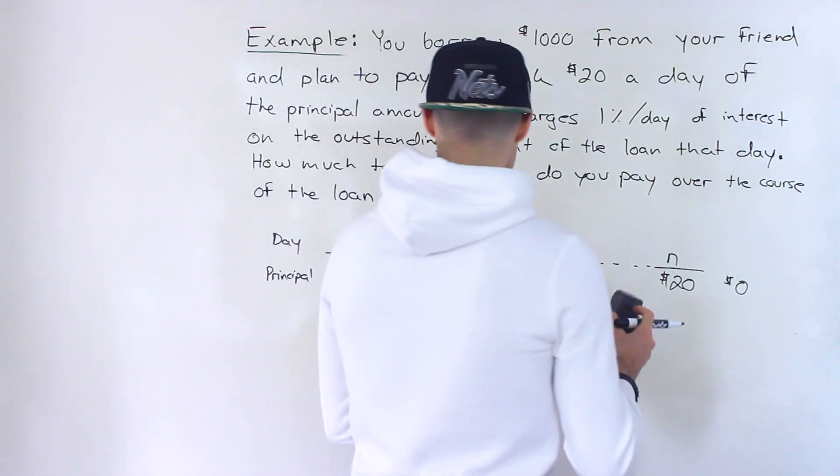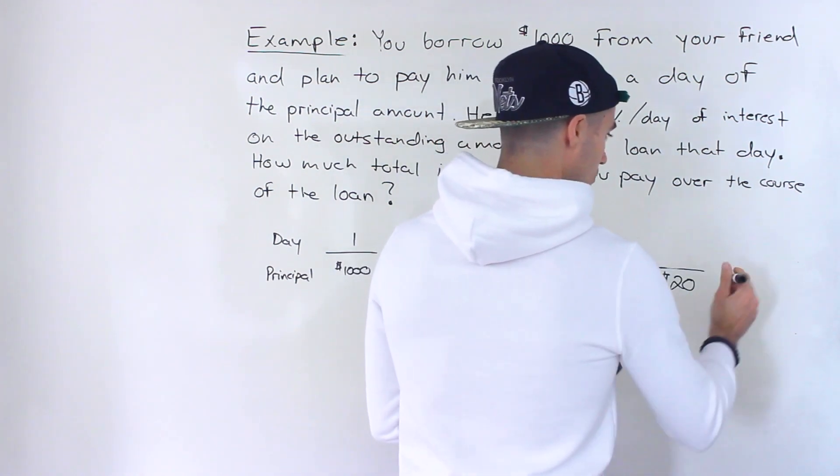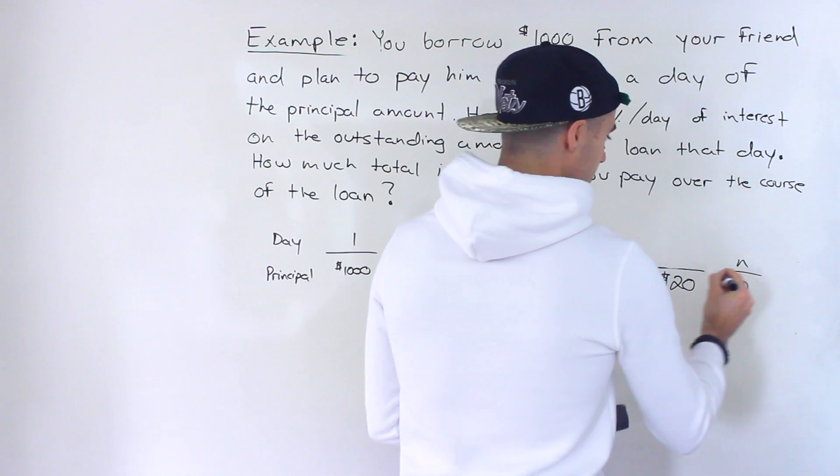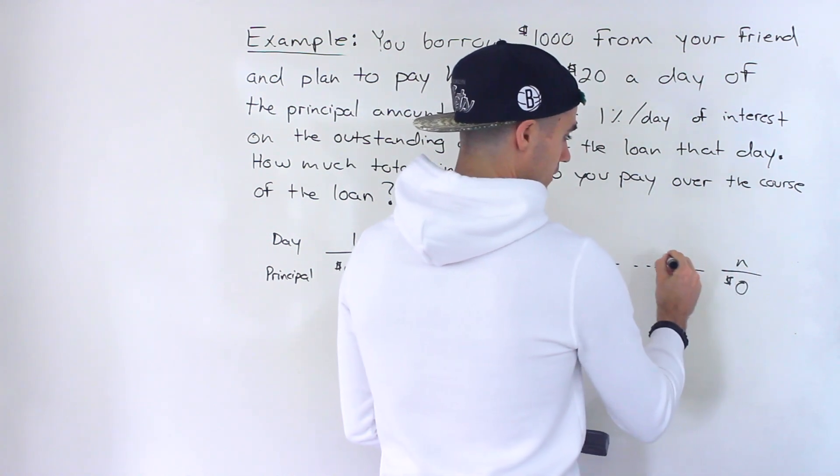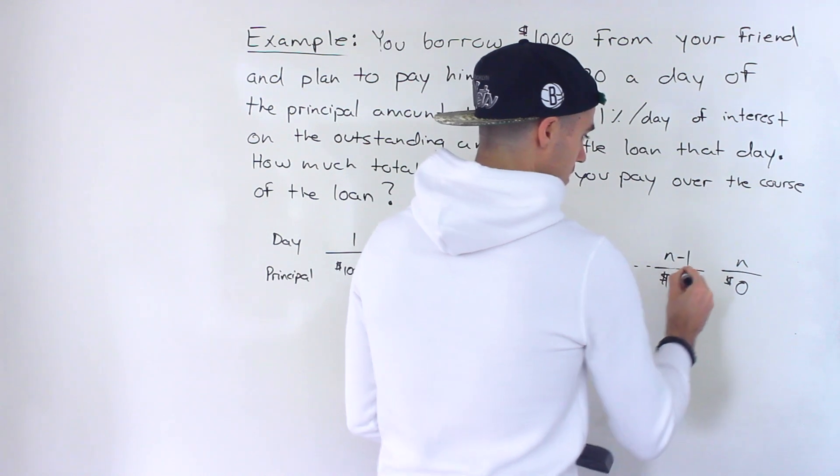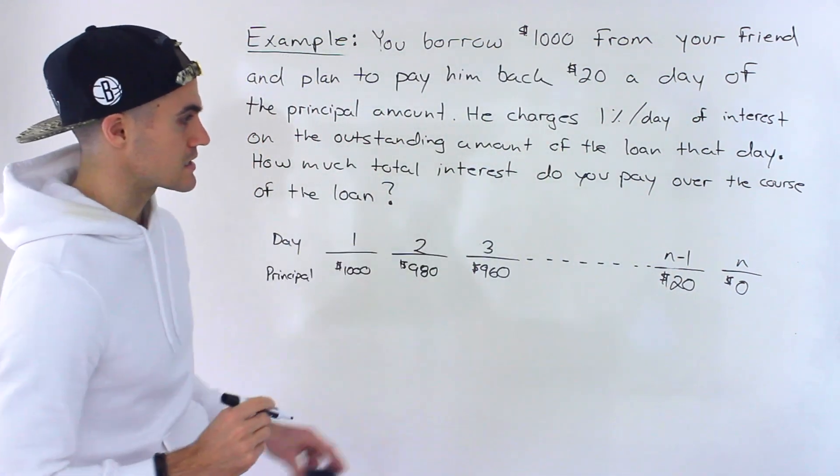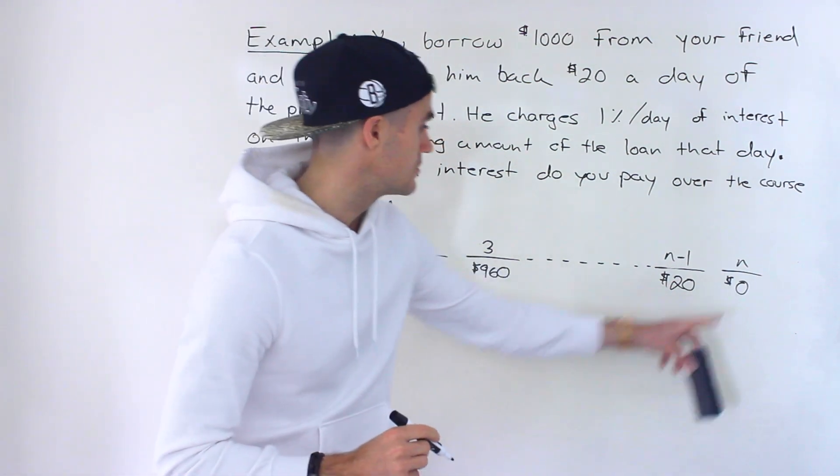So let's actually call this, just trying to think of how to organize this. Let's maybe call this N for now. I think eventually later on in the question, I'm going to let this be N, but I'll tell you why in a sec. Let's just call this N minus one. How many days is it going to take to get to zero?